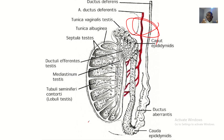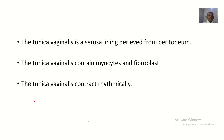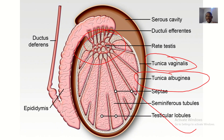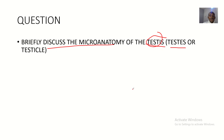The outermost layer should be the parietal layer, and the one engulfing the testes should be the visceral layer. The tunica vaginalis is a serosal lining derived from the peritoneum. The tunica vaginalis contains myocytes and fibroblasts. Since it has muscle cells — myocytes — it contracts rhythmically, and you can see that when you are sexually aroused. So that covers the micro anatomy of the testes: the tunica vaginalis as the outermost, the tunica albuginea in the middle, and the tunica vasculosa as the innermost.